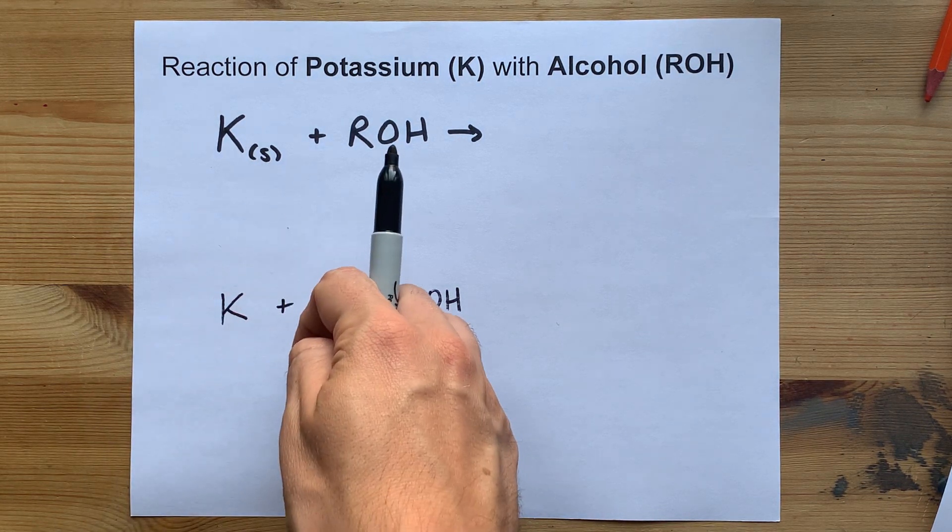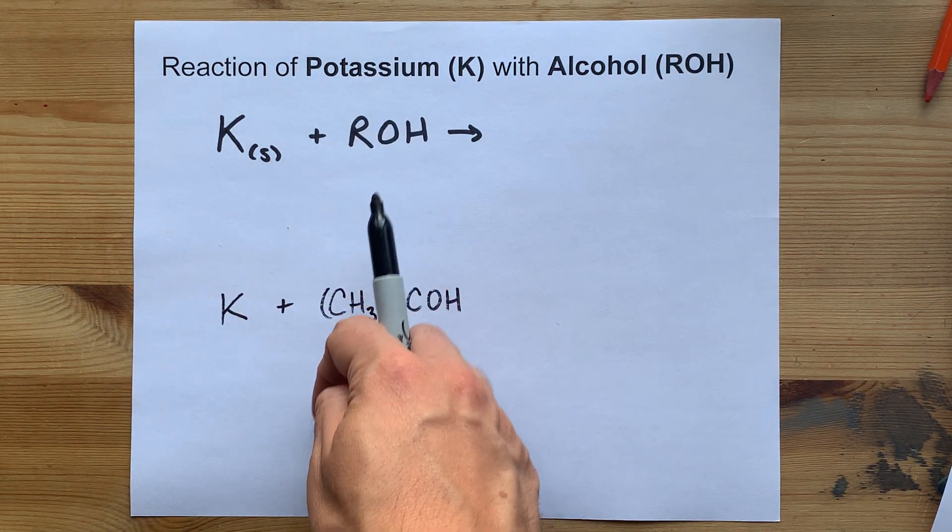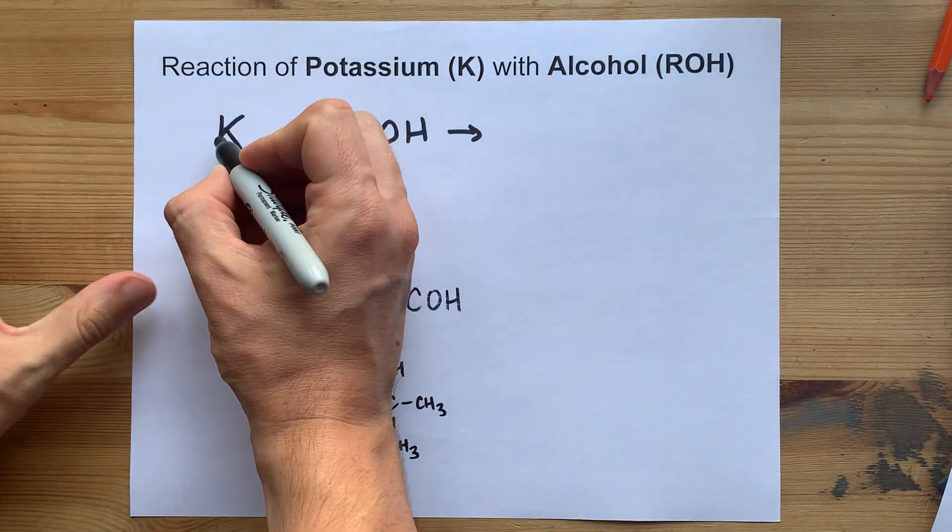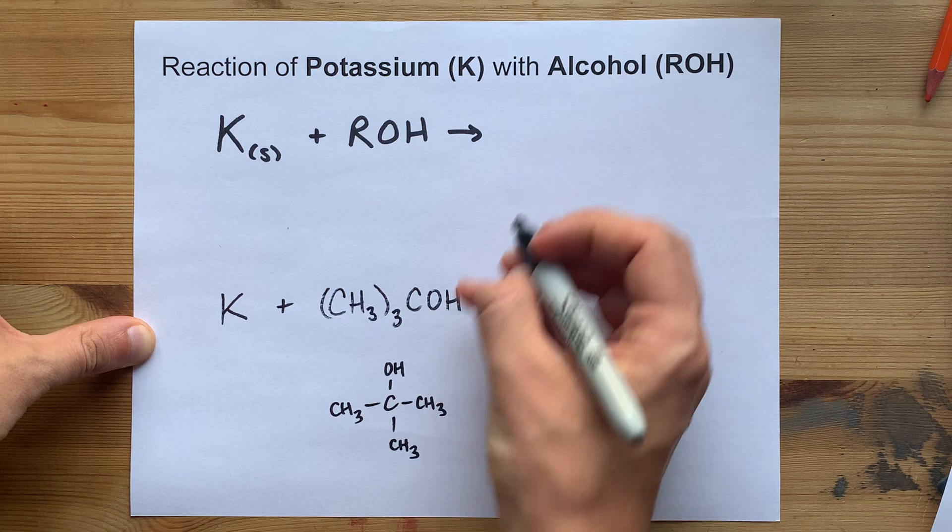When potassium metal reacts with an alcohol, and an alcohol is any carbon chain with an OH group on it, the potassium ends up displacing the hydrogen.